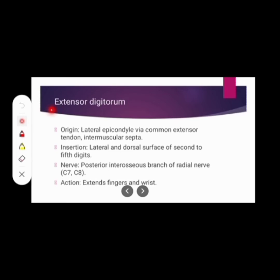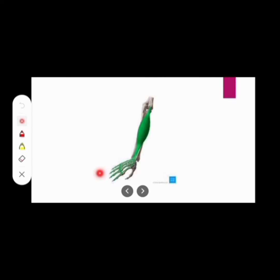Now extensor digitorum muscle. Its origin: lateral epicondyle via common extensor tendon and intermuscular septa. Insertion: lateral and dorsal surface of second to fifth digits. Nerve supply: posterior interosseous branch of radial nerve. Action: involved in finger extension and wrist extension.